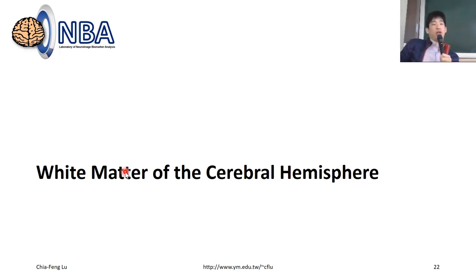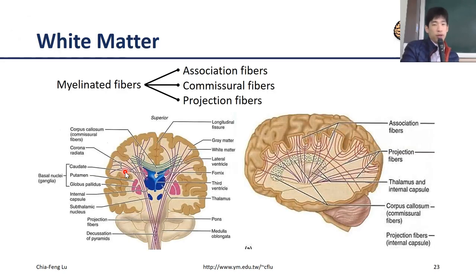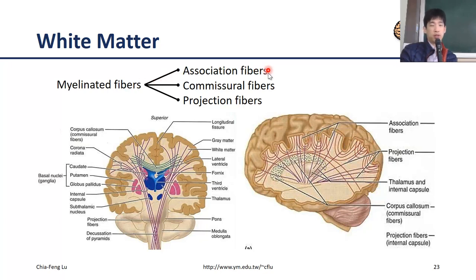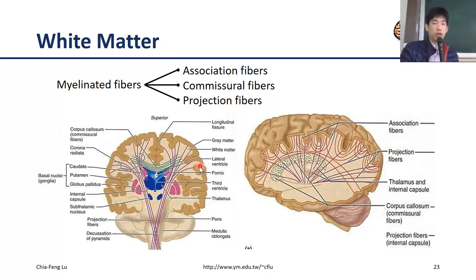For the next section, I'm going to introduce the white matter of the cerebrum. As I mentioned before, the white matter or the myelinated fibers can be categorized into three different types. The first one is the association fibers, the second one is the commissural fibers, and the final one is the projection fiber. Let me take the figure as an example to illustrate why we categorize the fibers into these three different categories.